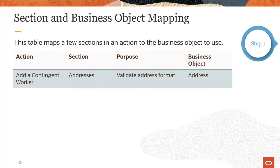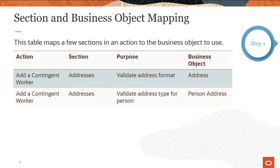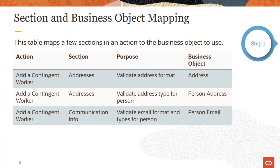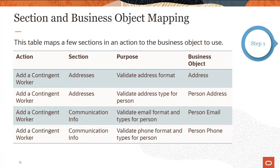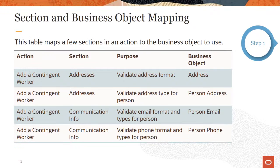It's not always obvious to pick out the business object you would use to meet the purpose of your rule. This table maps out a few sections and actions to the relevant business object. For example, in the addresses section of the add a contingent worker flow, if you want to validate the format of the address field, you would use the address business object. But for the same action and section, the address type is from the person address business object. For the same action, if you want to validate the email format in the communication info section, you would write your rule using the person email business object. And to validate the phone number, you would write a rule based on the person phone business object.